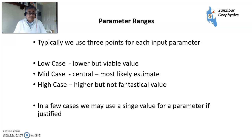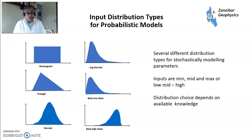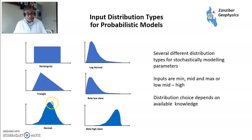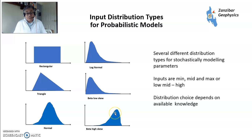Then you look at distribution types — how you distribute the parameters. A rectangle is effectively a single case. A triangle represents low, mid, high — triangles can be skewed either way, for example skewed towards the low side or as an equilateral triangle. A normal distribution is a bell curve with a low, high, and mid. A log normal is skewed — in this case towards the low side — where the low is most likely, and the high case is further out. Beta distributions are similar to log normal with low or high skew. Most people tend to go for beta or log normal; in a few cases, normal; triangle or rectangular may also be suitable. Look at the geology and what's geologically possible.